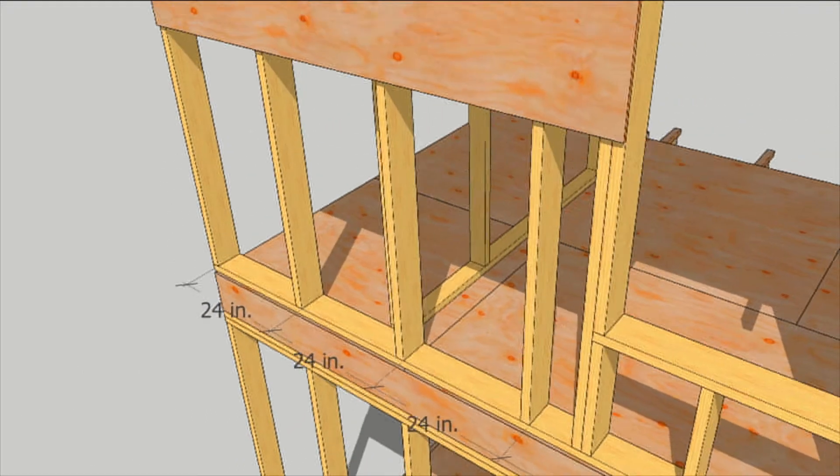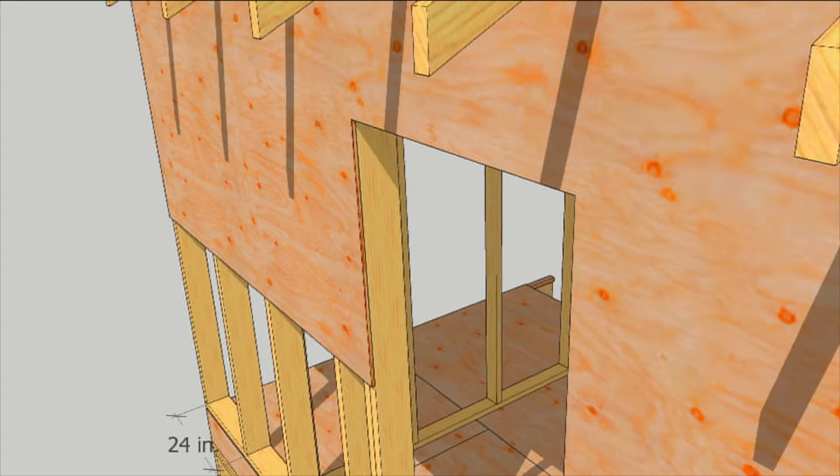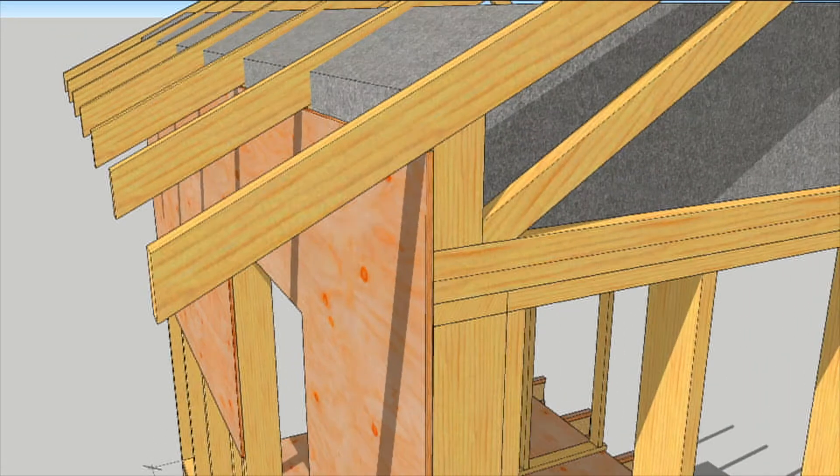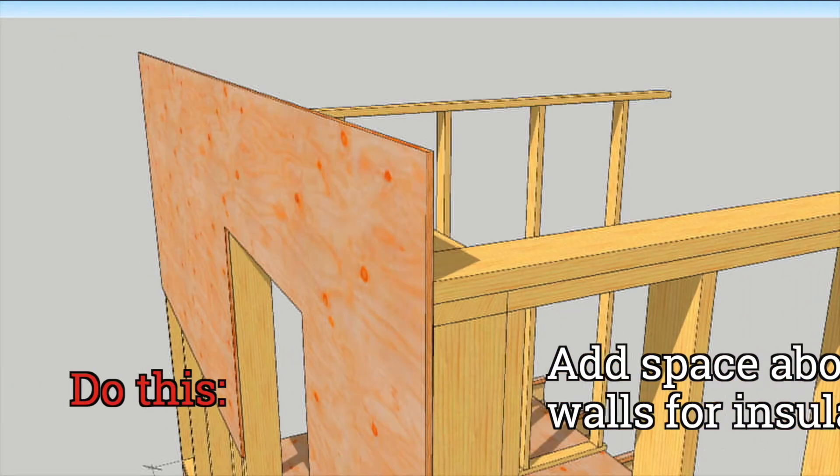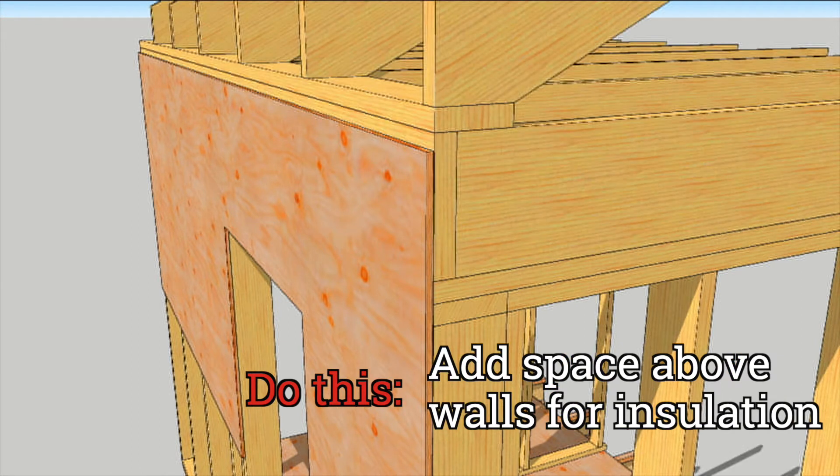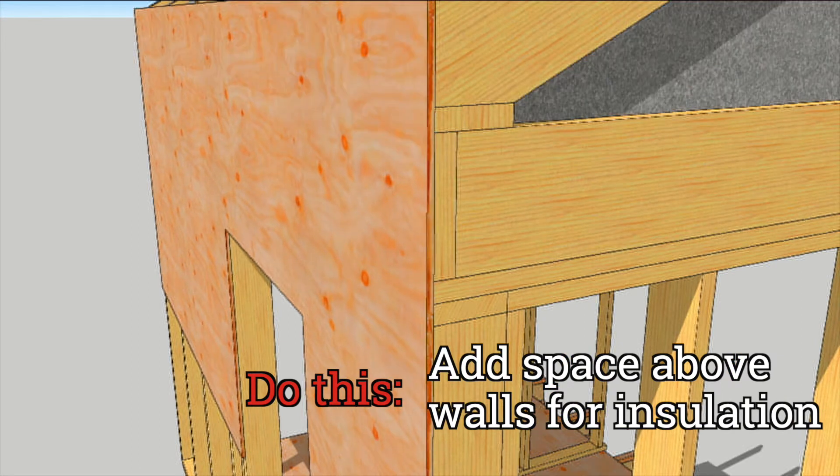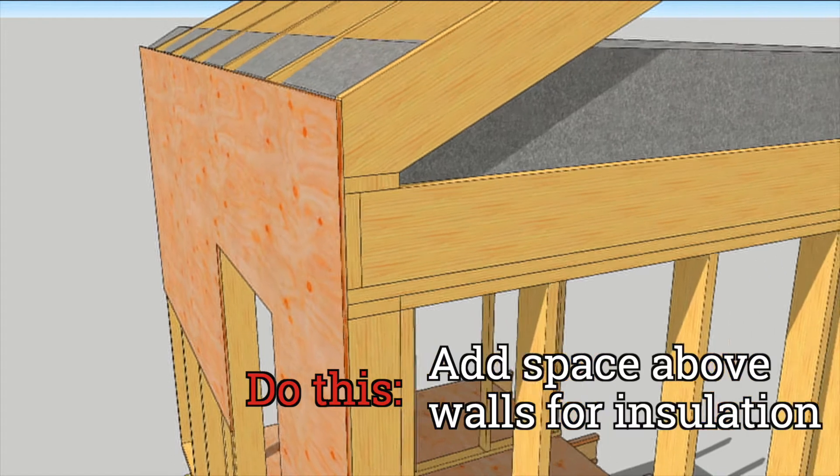Raised heel trusses are a great way to add insulation over the exterior walls. Another way is to over frame the roof by adding a complete ceiling assembly before the rafters.